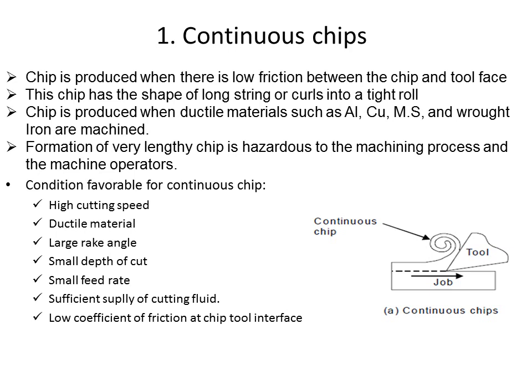Formation of a very lengthy chip is hazardous to the machining process and the machine operators, as the chip can get stuck on the machine. Conditions favorable for continuous chip formation are: high cutting speed, ductile work material, large rake angle, small depth of cut, small feed rate, sufficient supply of cutting fluid, and low coefficient of friction at the chip-tool interface.